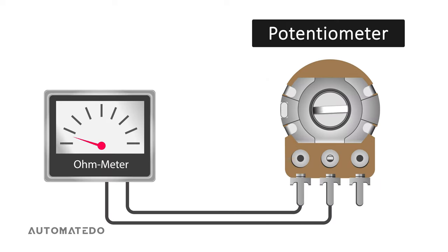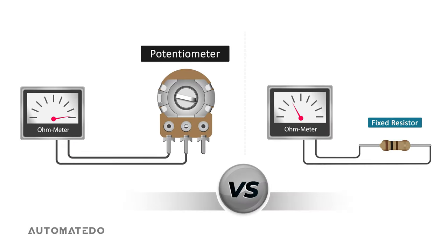A potentiometer is a manually adjustable variable resistor and it is so useful when it compares to a fixed resistor. Why, you may ask?